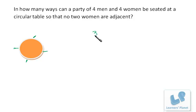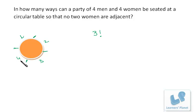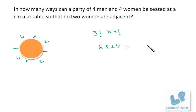Now we arrange four women such that no two are adjacent. We have four places available — each woman sits between two men. Since we have four places and four women, the four women can be arranged in 4! ways. So the total is 3! × 4! = 6 × 24 = 144 ways.